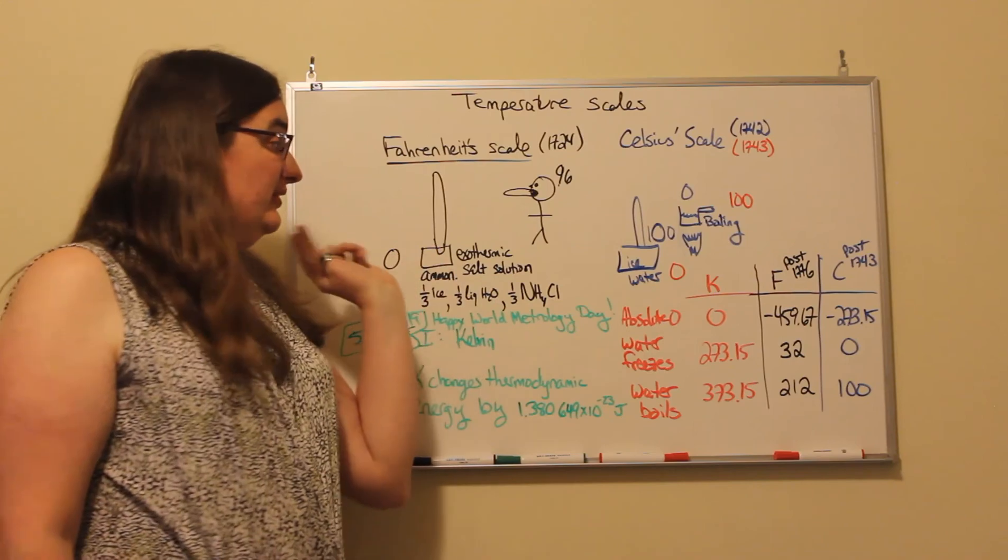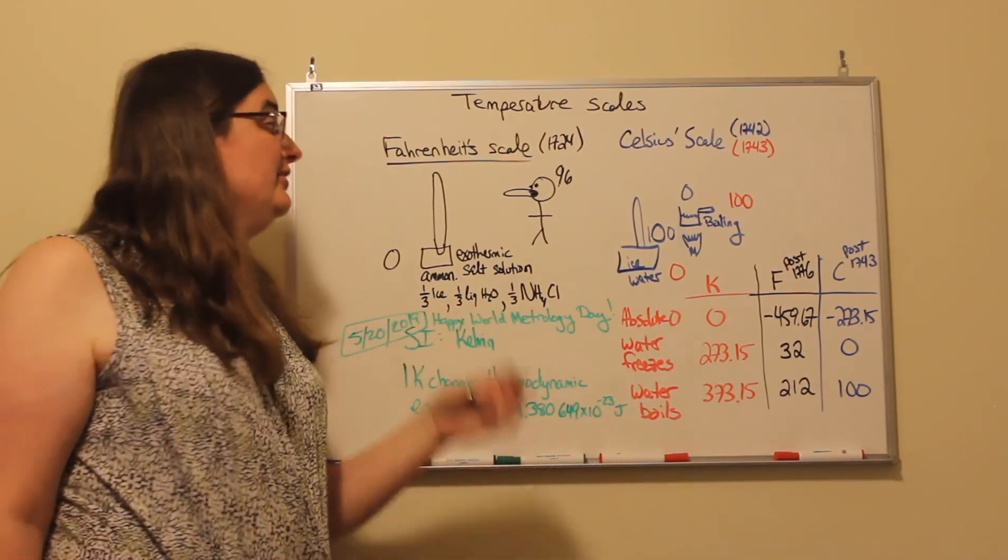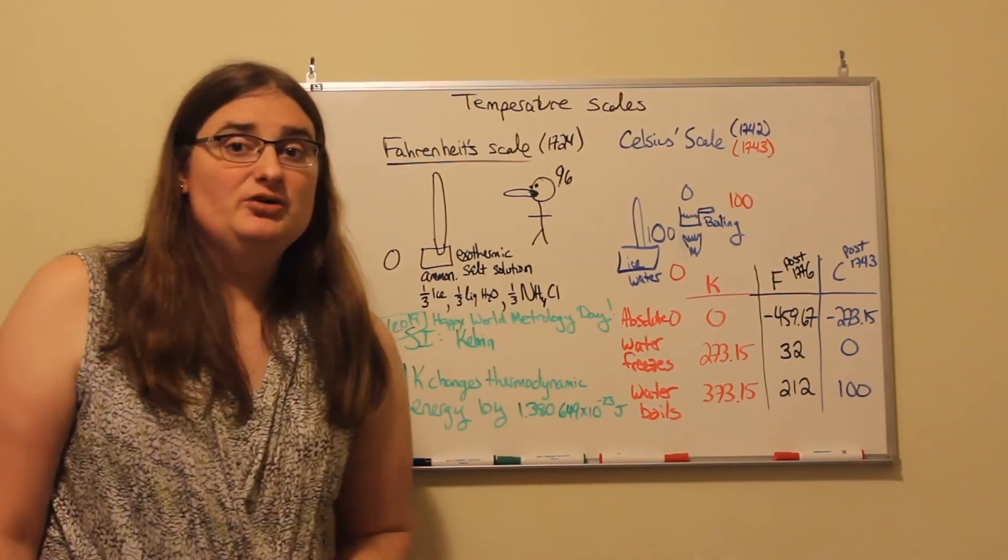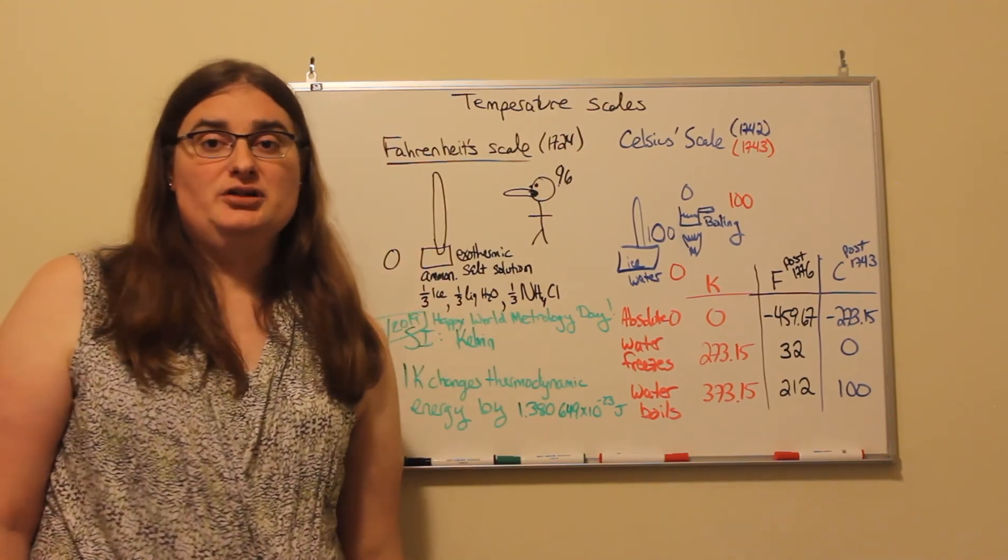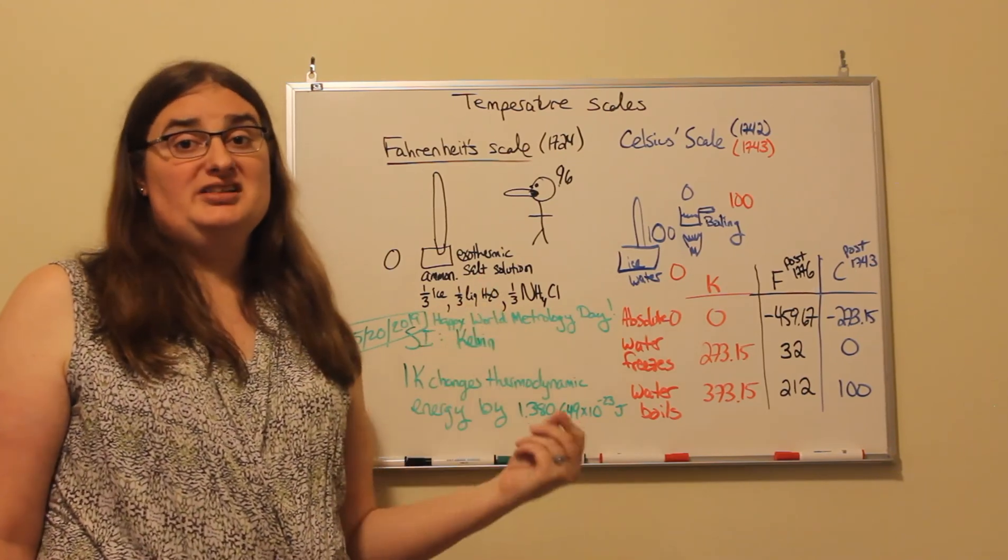The other reference point he used was based off Newton's temperature scale, and that was human body temperature. He set zero to be the ammonia salt solution, 96 to be human body temperature, and he noticed that freezing water happened around 32 on his scale.